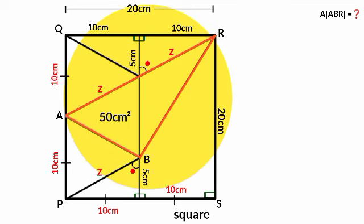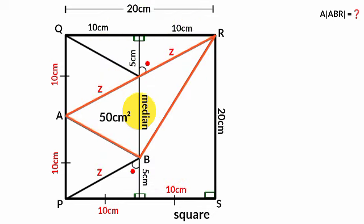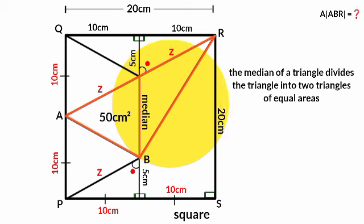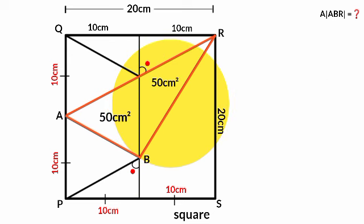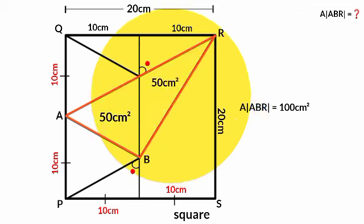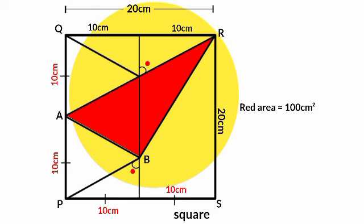Now, looking at triangle ABR, the line bisects one of its sides, meaning it is a median of triangle ABR. A median divides a triangle into two smaller triangles of equal area. Therefore, since one part has an area of 50 centimeters squared, the other part also has an area of 50 centimeters squared. The total area of triangle ABR equals 50 plus 50 = 100 centimeters squared — that is the red area we set out to calculate.